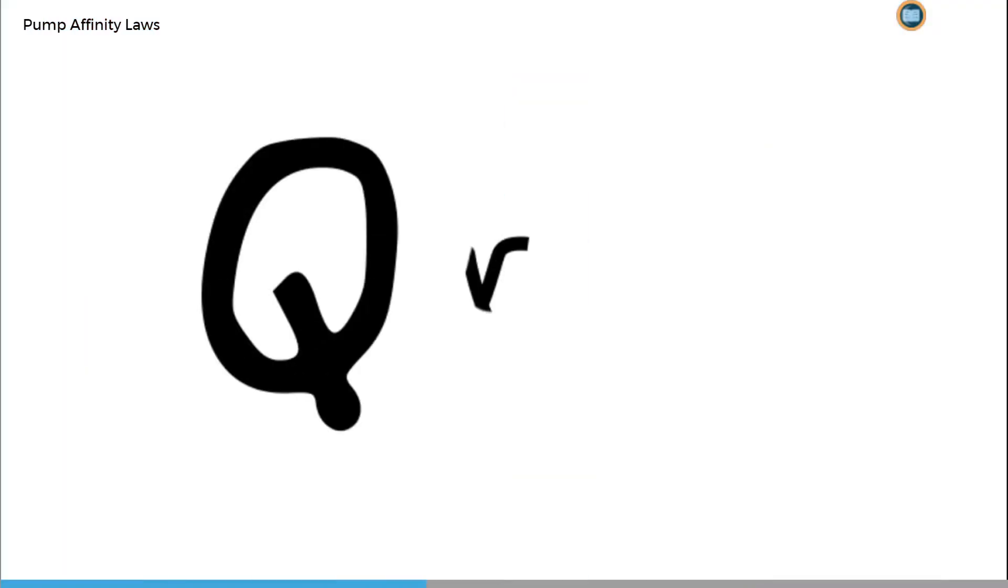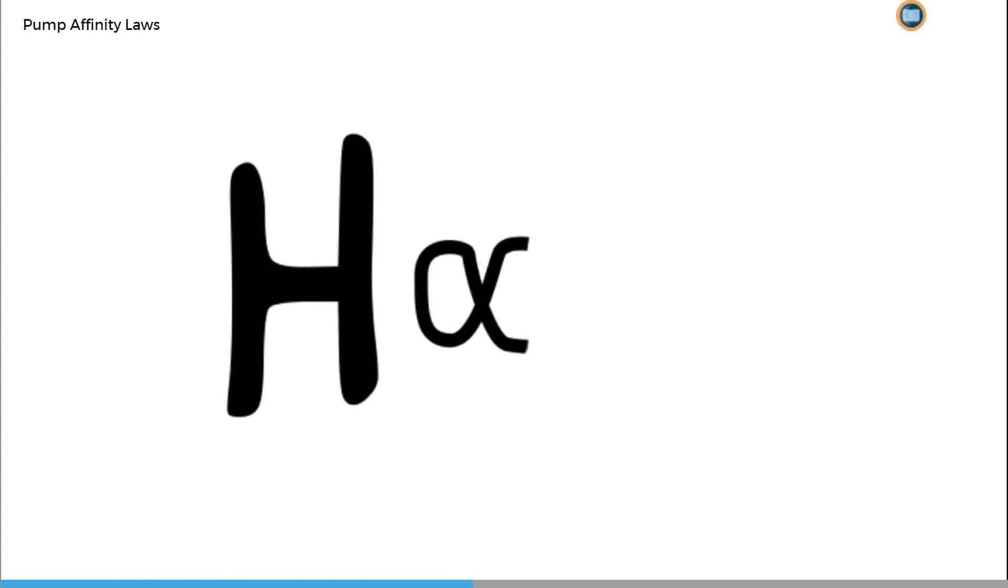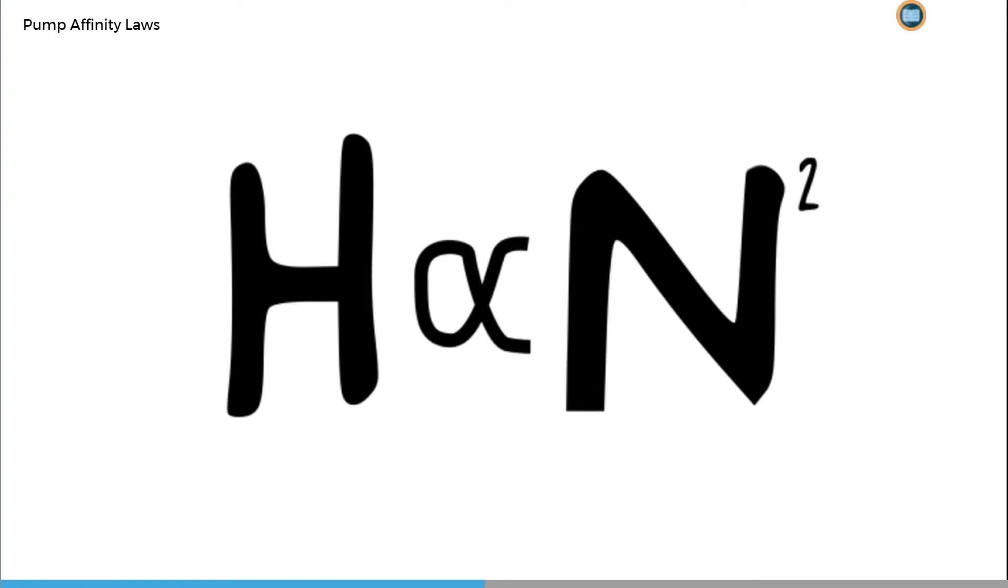One of these laws states that flow, Q, is directly proportional to the pump rotational speed, N, and another states that head, H, is directly proportional to the square of the pump rotational speed.